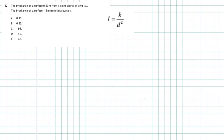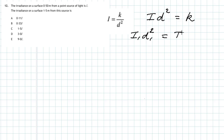We rearrange that equation by cross-multiplying to give I × d² = constant. From this, we can write: the first irradiance times the first distance squared equals the second irradiance times the second distance squared. That is: I₁d₁² = I₂d₂².